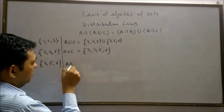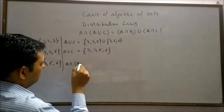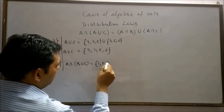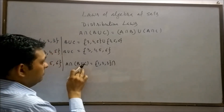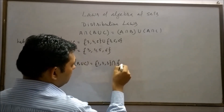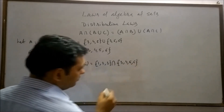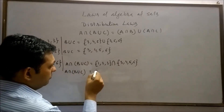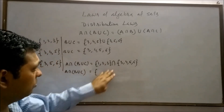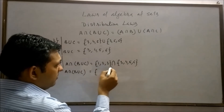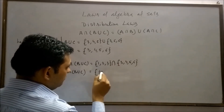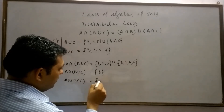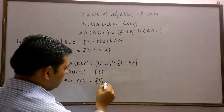Now take A intersection (B union C). Set A = {1, 2, 3} and B union C = {3, 4, 5, 6}. The common element between these two sets is only 3. Therefore, A intersection (B union C) = {3}. This is our first result.